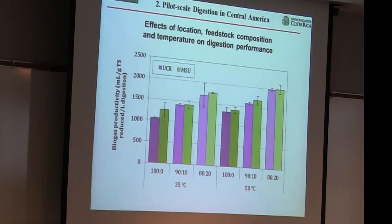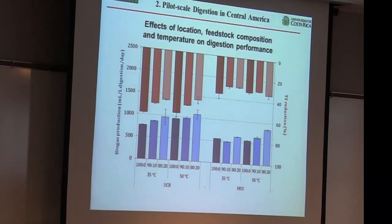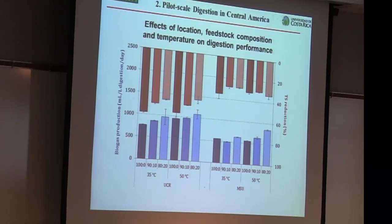We looked at biogas production at different ratios and time frames, and how they differ across the two regions. There are probably four papers that have been generated on some of this research. Looking at biogas production also related to volatile solids reduction — the carbon in our biogas as methane and carbon dioxide has to come from the volatile solids or organic matter in those waste streams. We should see correlations between solids reductions and biogas production, and generally when we see high solids reduction we expect a linear relationship in biogas production.